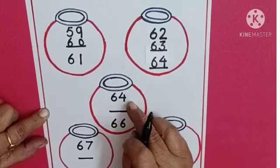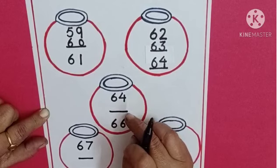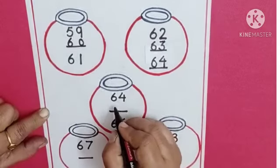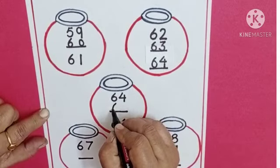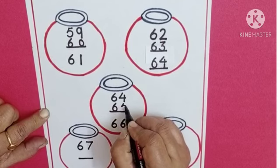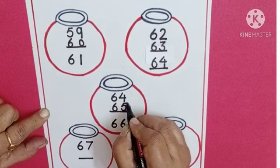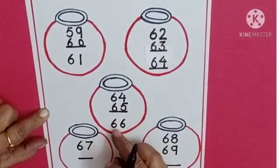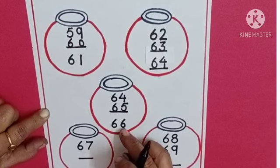Which number is this? 64. Which number is missing here? I hope you know. Yes. 6, 5, 65. 65, 66.